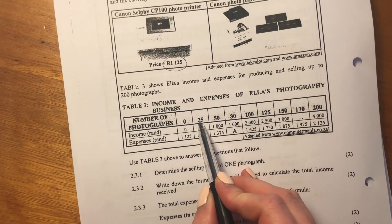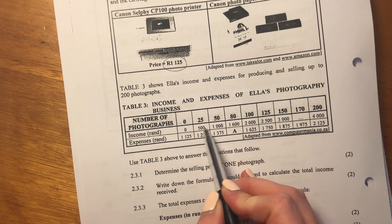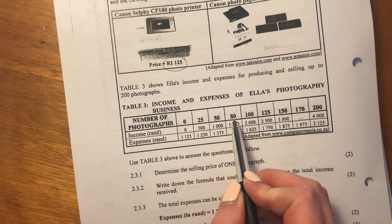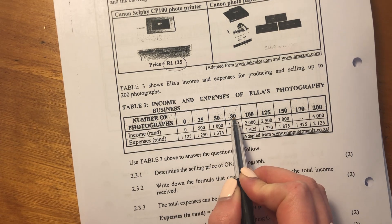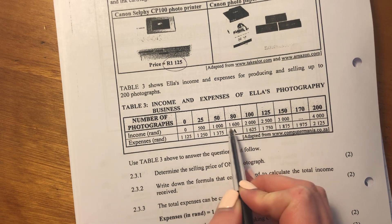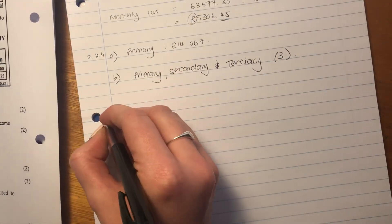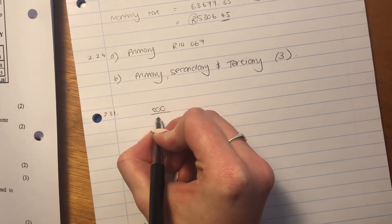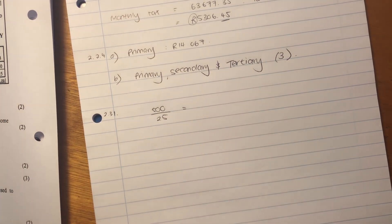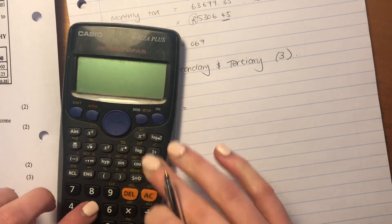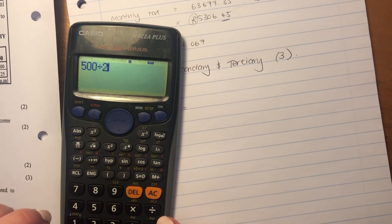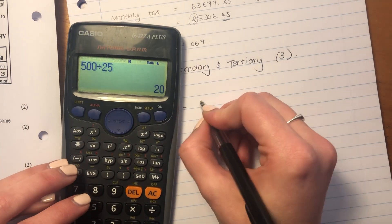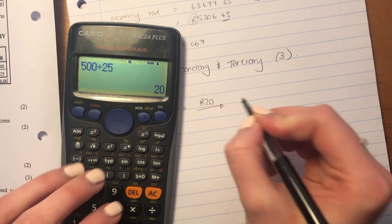So we see that 25 photographs cost 500, 50 cost 1,000, 80 cost 1,600. So what we're going to do is for 2.3.1, we can just say 500 divided by 25, and that will give us the amount for each photograph, right? Because it asked us for one. So it's actually 20 rand per photograph.